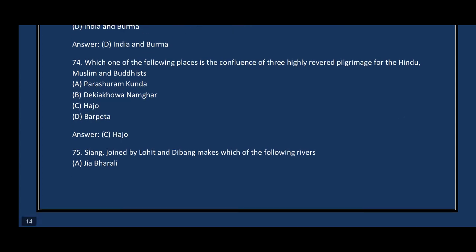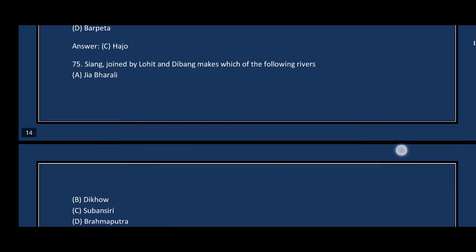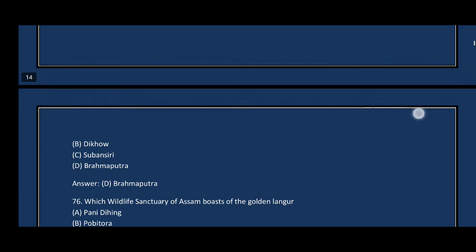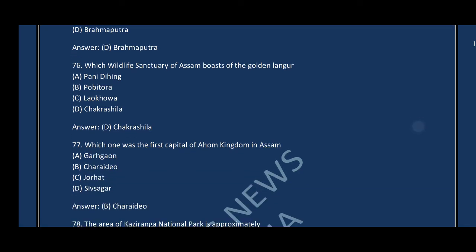Question number seventy-five: Siang joined by Lohit and Dibang makes which river? The correct answer is option D — Brahmaputra. Siang, Lohit, and Dibang are the three headstreams of the Brahmaputra River. Question number seventy-six: Which wildlife sanctuary is the abode of the Golden Langur? The correct answer is option D — Chakrasila.